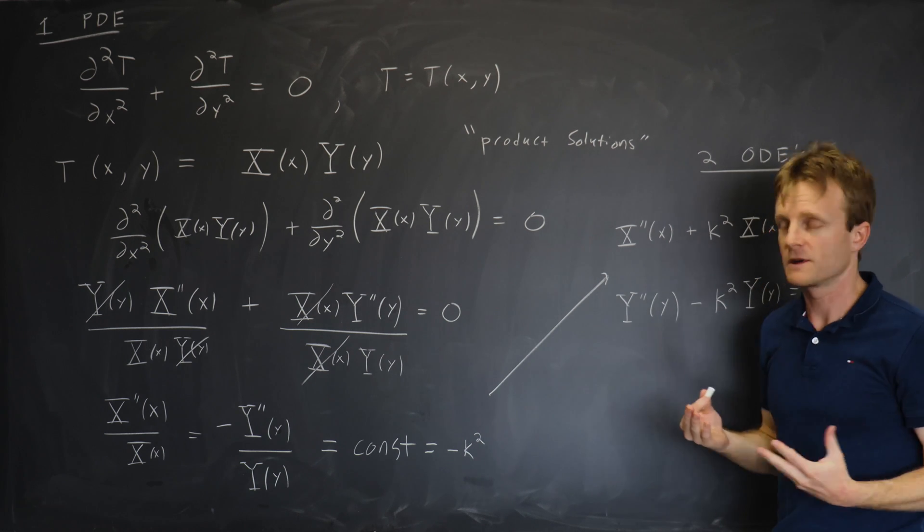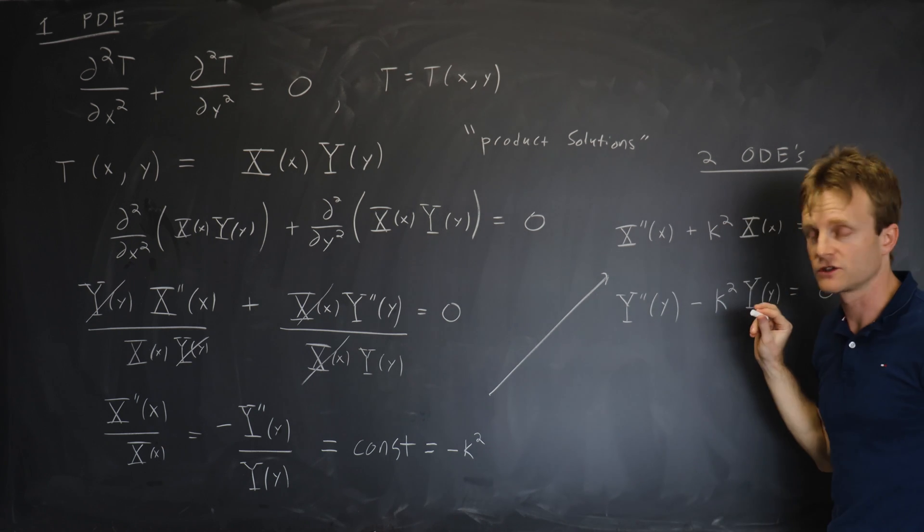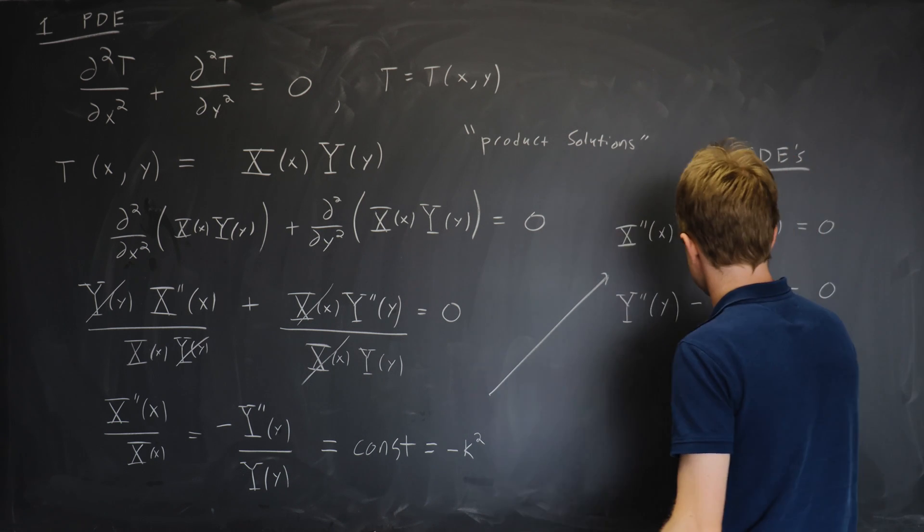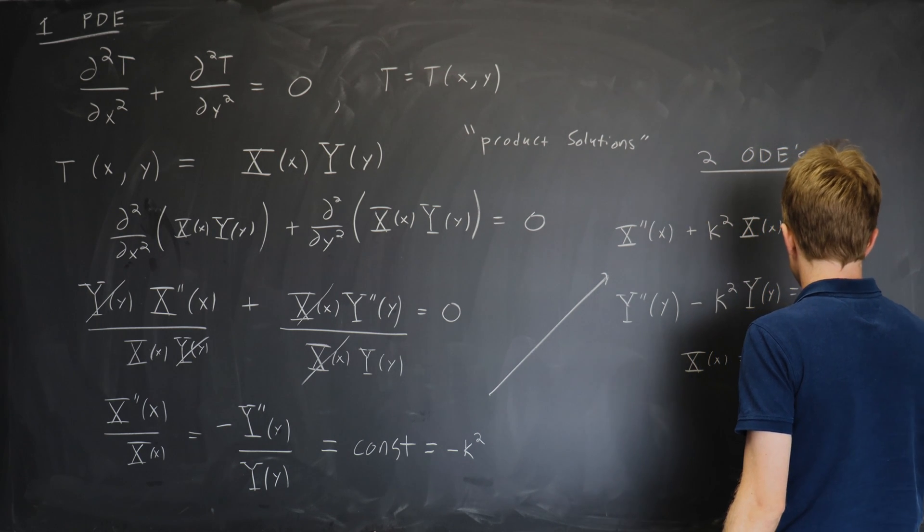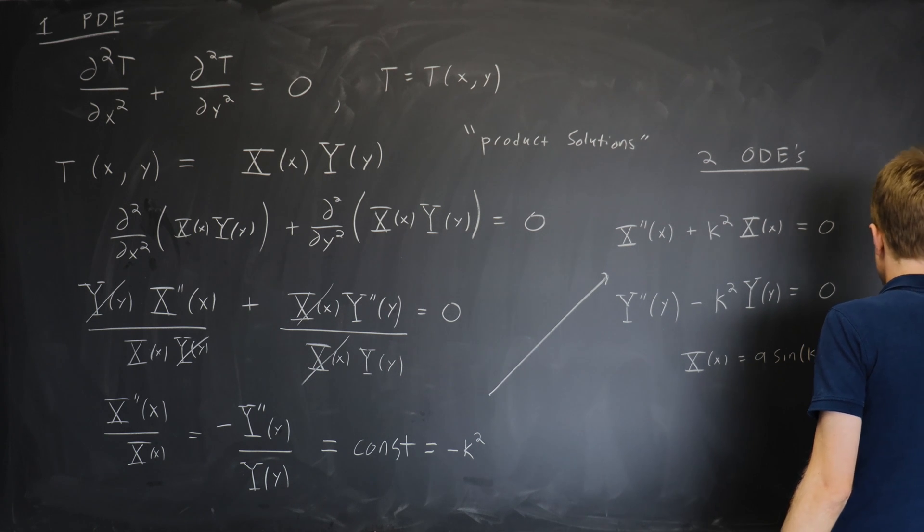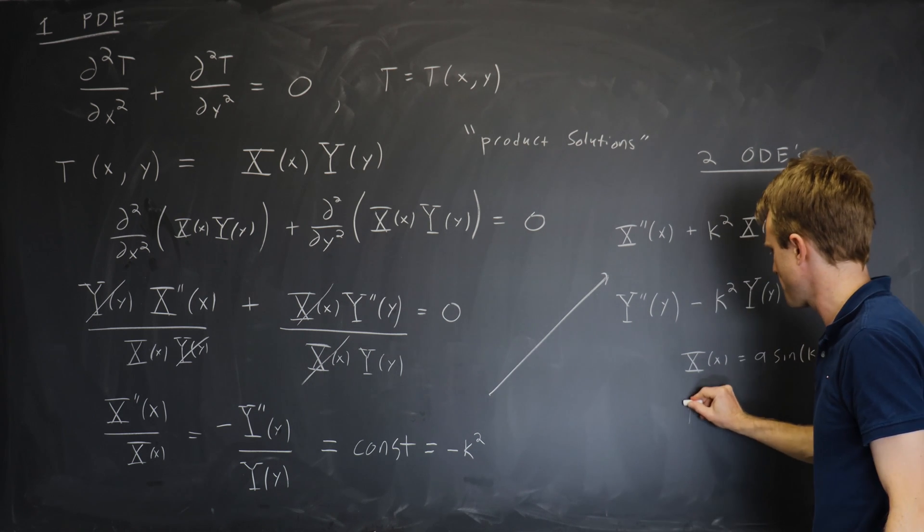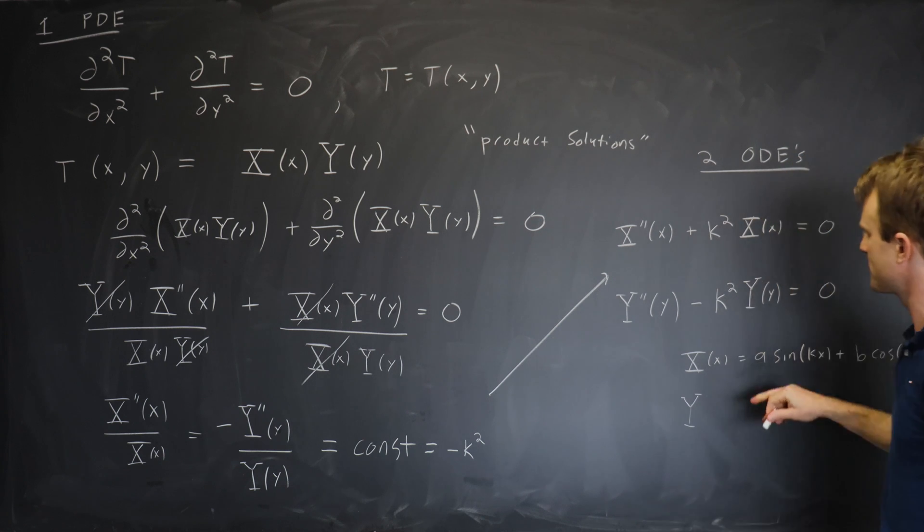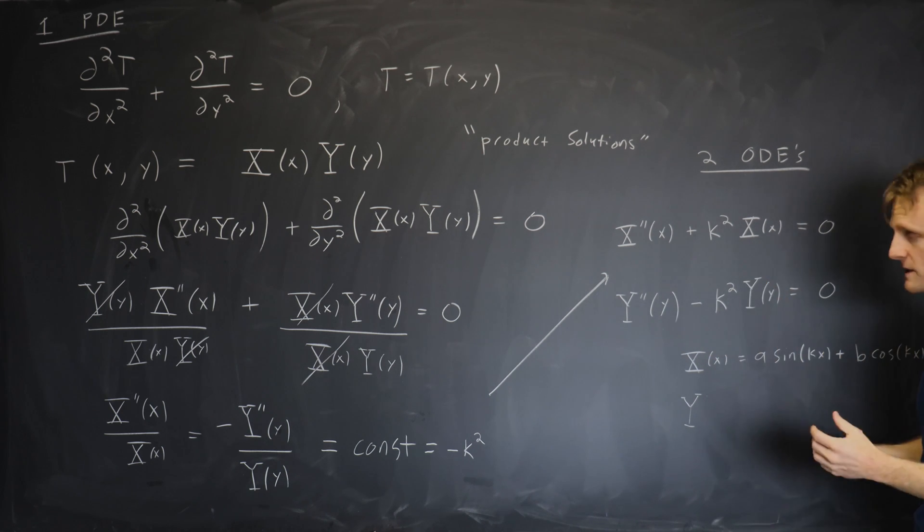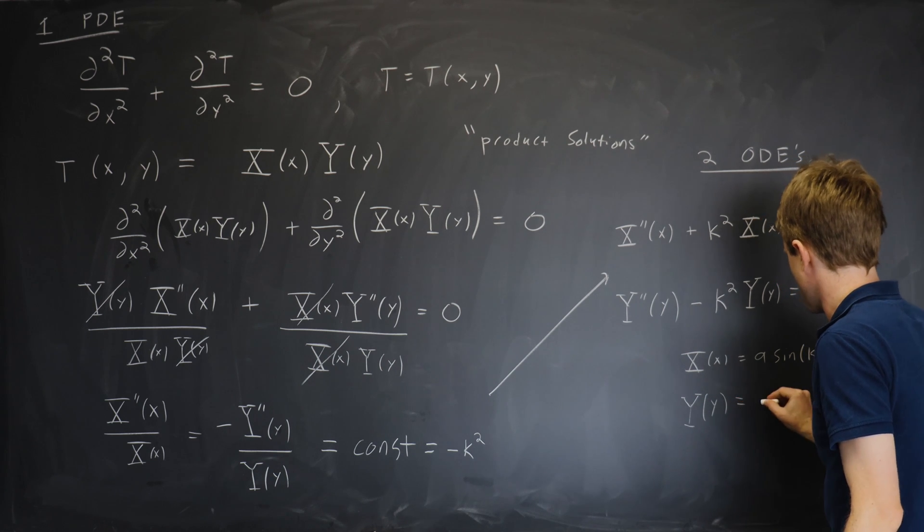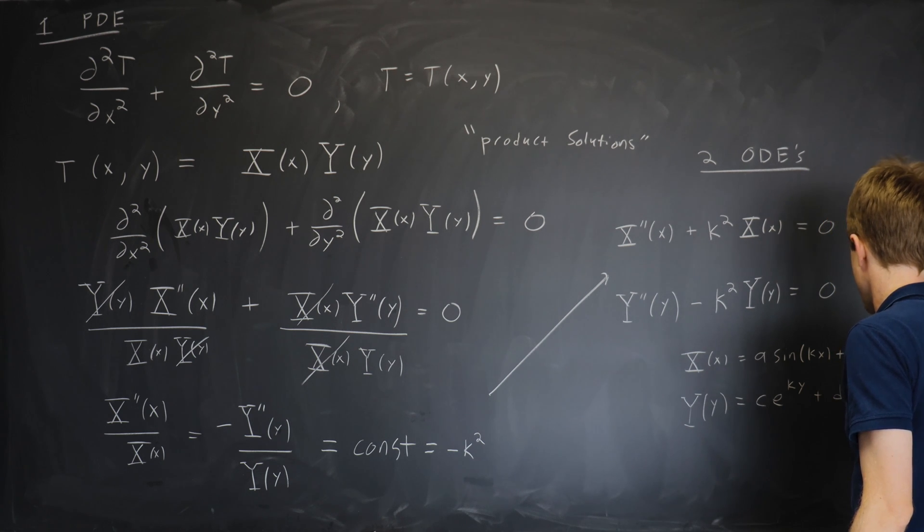And these are ODEs that are probably familiar to you. The top one says that if you take two derivatives of the function, it's proportional to minus the function. And so this one is sines and cosines. So the solution for x of x is a sine kx plus b cosine kx, where a and b are anything. We get two constants because it's a second order ordinary differential equation. And the one on the bottom is the same thing with the sign flip. This says if you take two derivatives, you get something proportional to the original function. And that's an exponential. So capital Y is c e to the ky plus d e to the minus ky.